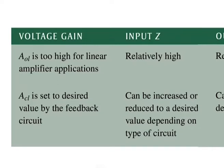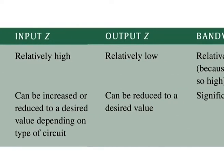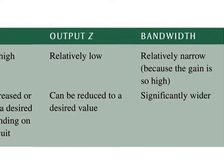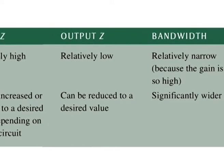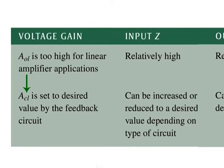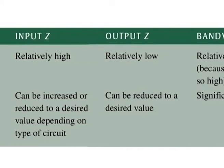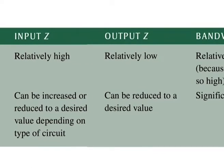Without negative feedback, voltage gain is too high for linear amplifier applications. Input impedance is relatively high, output impedance is relatively low, and bandwidth is narrow because the gain is so high. With negative feedback, voltage gain is set to the desired value by the feedback circuit. Input and output impedance can be increased or decreased, and bandwidth is significantly wider.